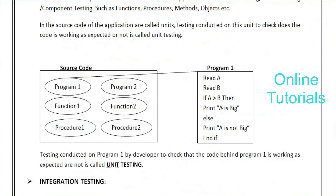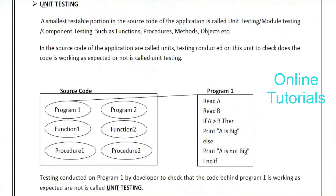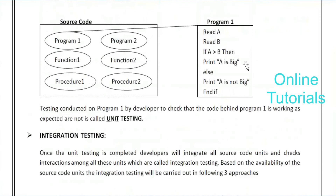Testing functions, procedures, or individual programs — whatever it may be — is called unit testing. It is conducted by the developer. Just as a reference, if we take Gmail, the login part itself would be considered a unit, right? Yes, the unit means testers will not be involved in that — developers are doing testing on the source code, hence white box testing is in the picture.